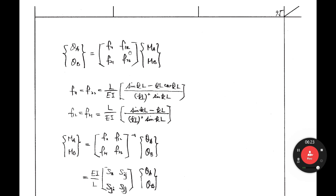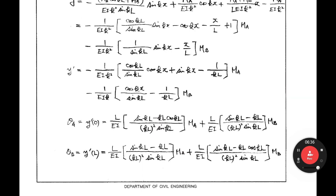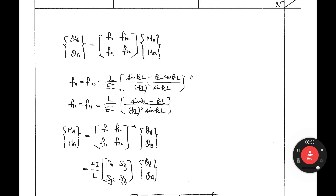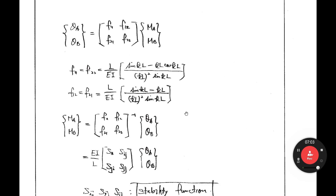You can write the matrix form: ζA and ζB on one side, MA and MB on the other, with entries F11, F12, F21, F22. F11 and F22 are one value, F12 and F21 are another. That is the flexibility matrix. If you take the inverse of this flexibility matrix, you can rewrite the equation with MA and MB moved to the left-hand side.